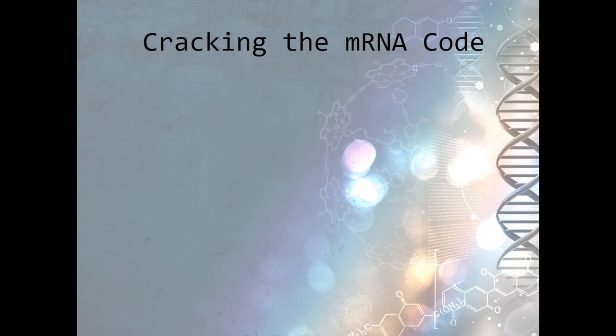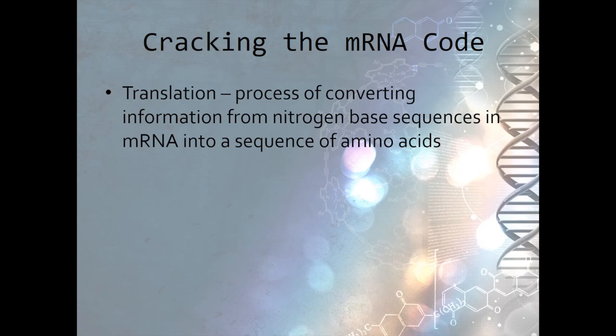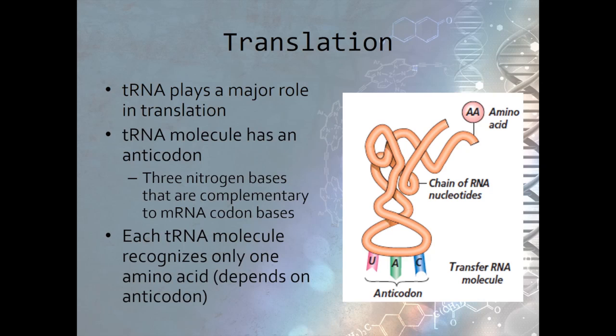What must happen in order to crack that coded message carried by mRNA? As with any language, translation occurs. During the translation process, the information coded in the nitrogen-based sequences is translated into a sequence of amino acids. This is where tRNA comes into play. The tRNA has an anticodon made up of base pairs that are complementary to the bases of an mRNA codon. Each anticodon corresponds to a single amino acid that is attached to the tRNA.